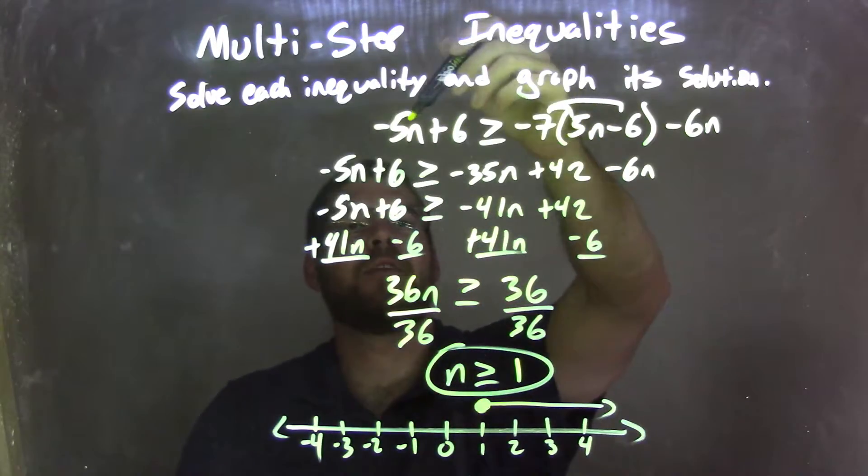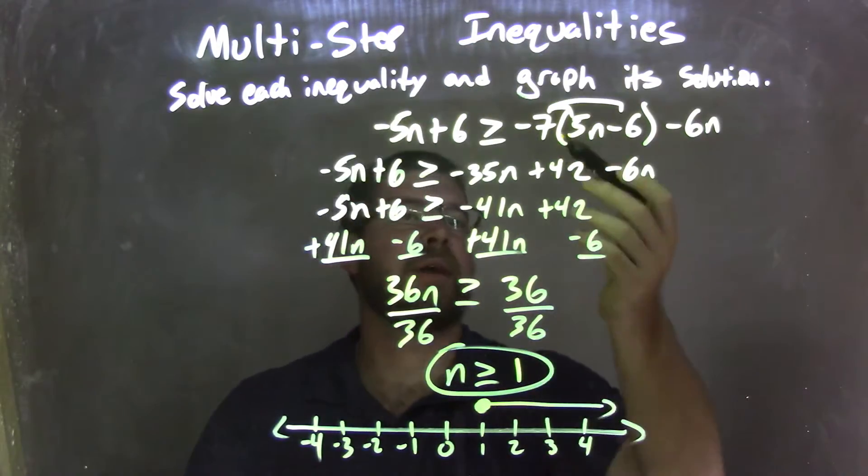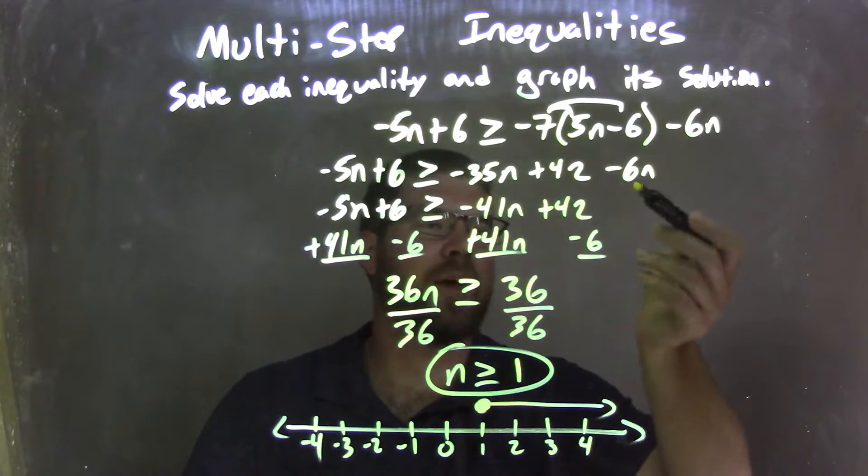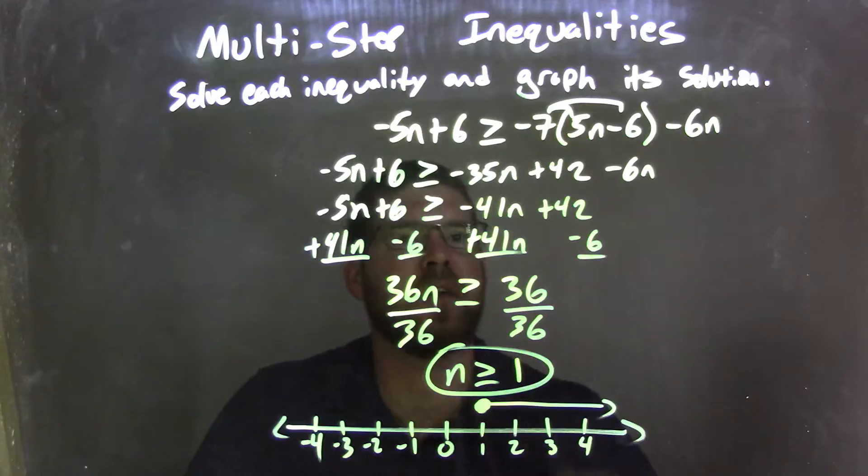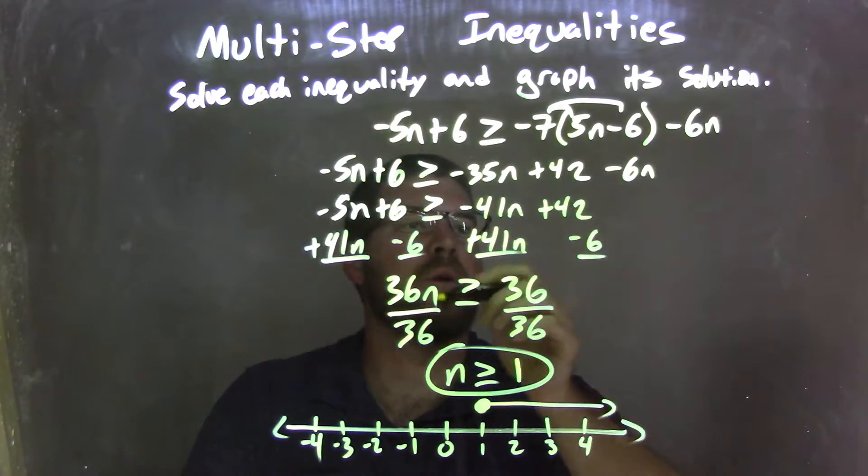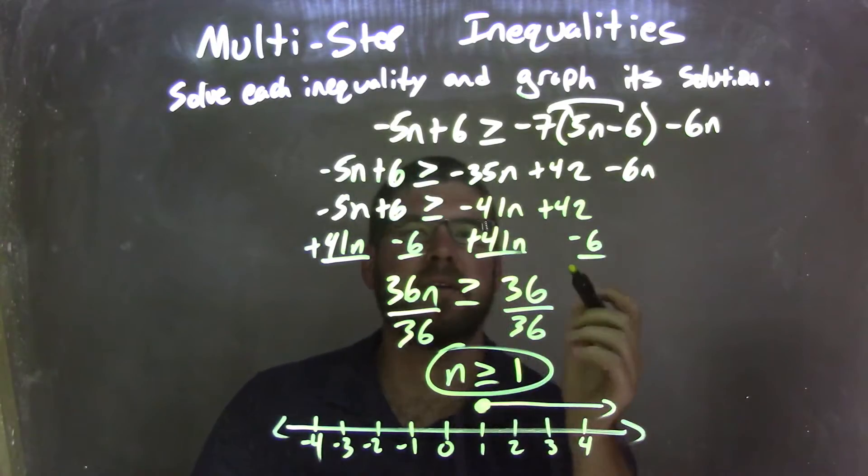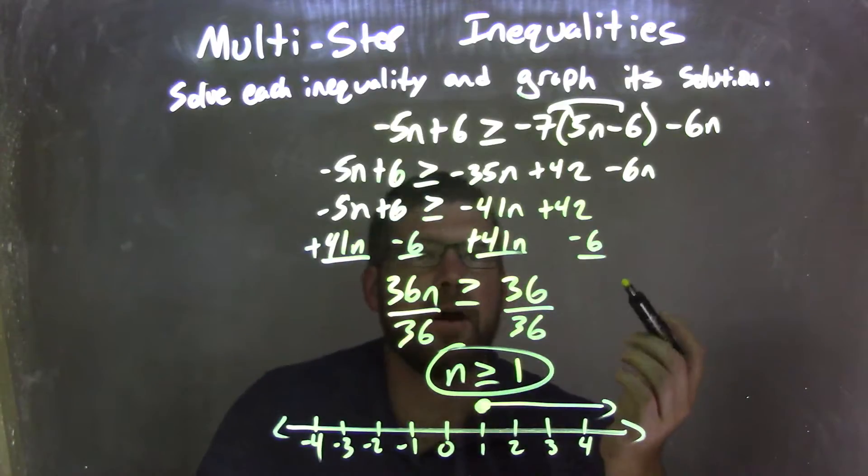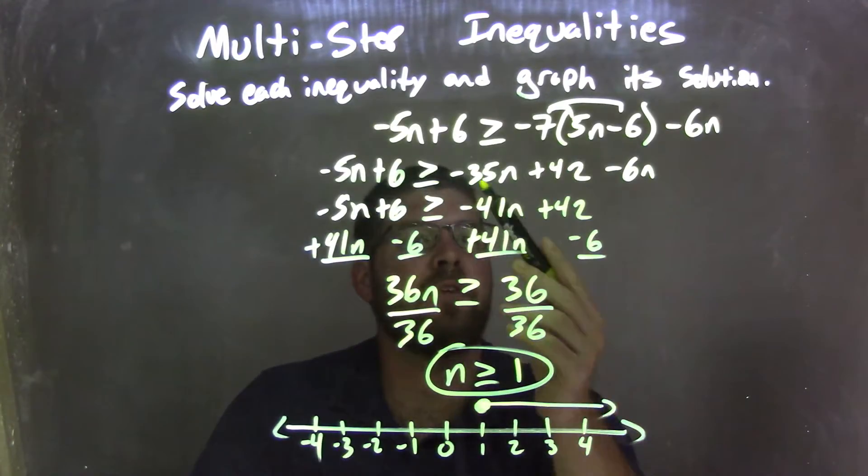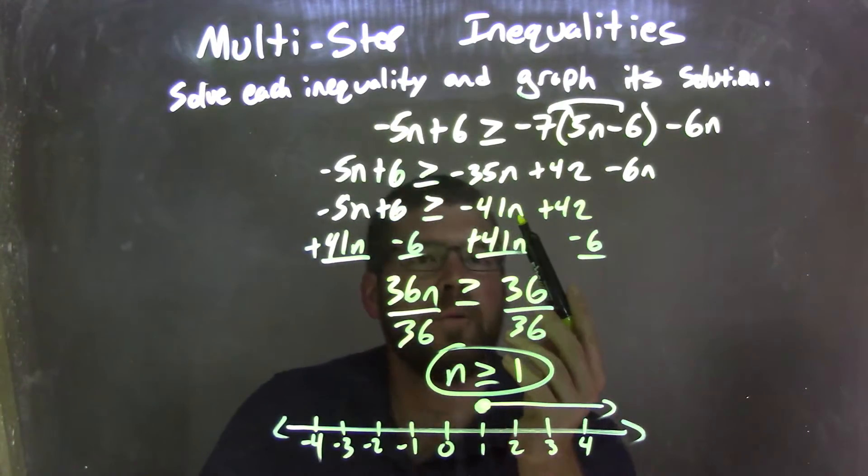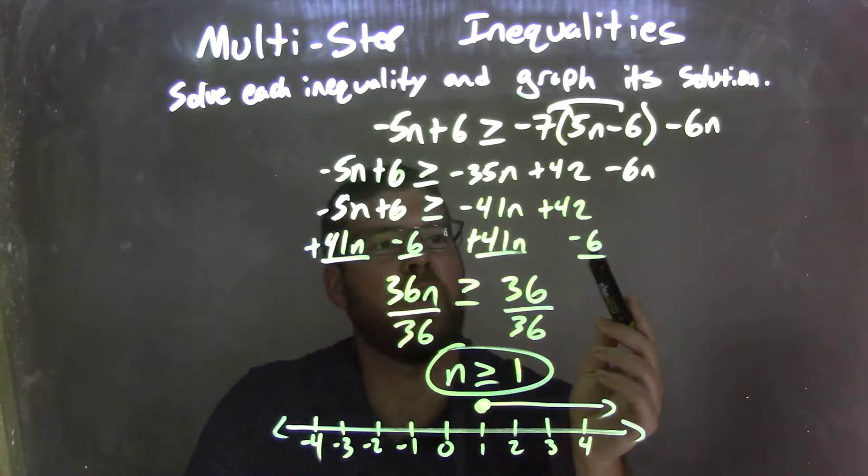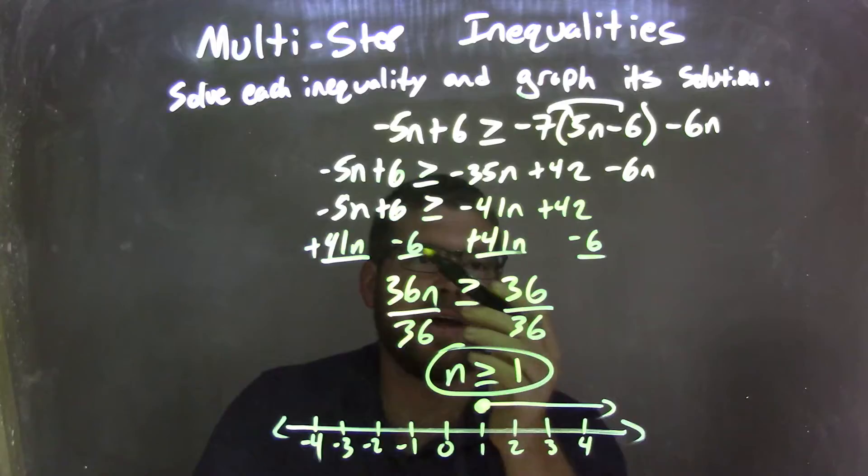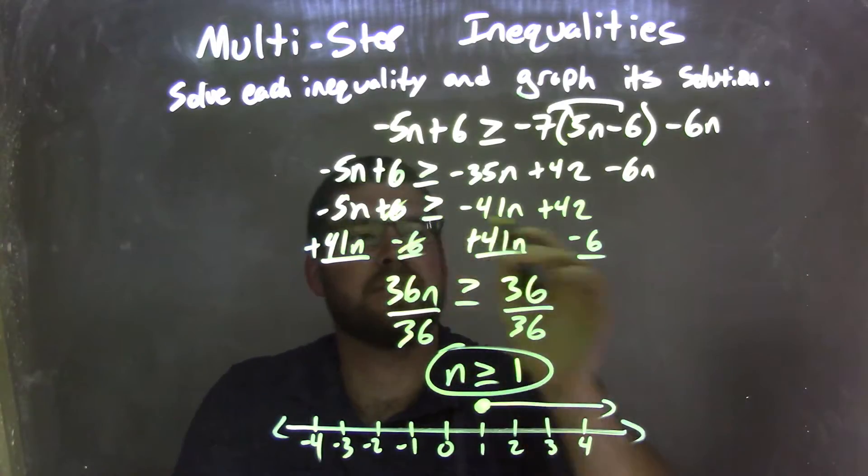So let's recap. We have negative 5n plus 6 is greater than or equal to negative 7 times (5n minus 6) minus 6n. I distributed the negative 7 across to give me negative 35n plus 42, and then just brought down the minus 6n. I then combined my like terms on each side, so negative 35n minus 6n is negative 41n. I then added that 41n to both sides and brought the 6 over to the right. And I canceled out the negative 6s here, and then canceled out the 41s there.